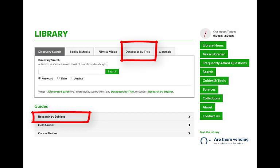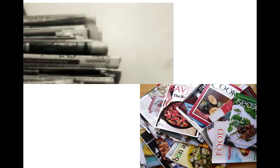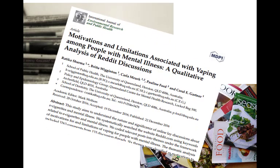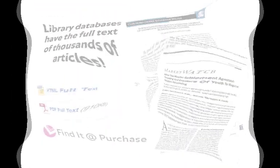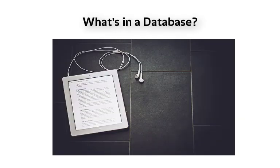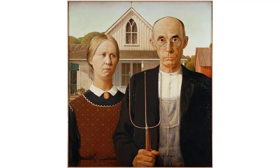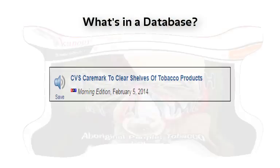Library databases offer the best way to search for and find article citations from thousands of newspapers, magazines, and academic journals that you aren't likely to find available free on the web. Many library databases provide fast access to the full text of articles. Databases may also contain ebooks, book chapters, images, audio files, and videos.